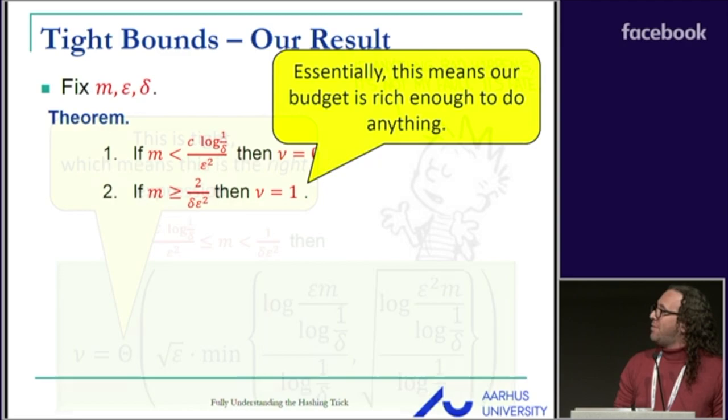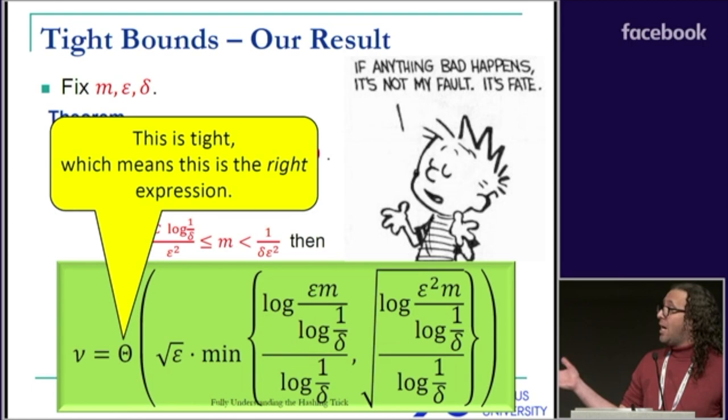If M is between these values, then this is the correct asymptotic bound. This is tight, so this is the right expression, however nice it is.